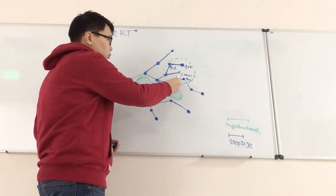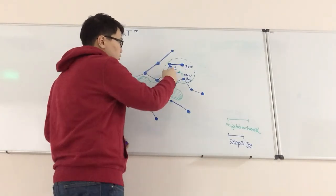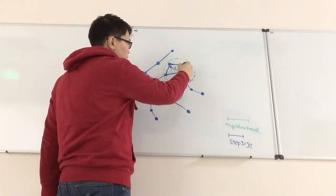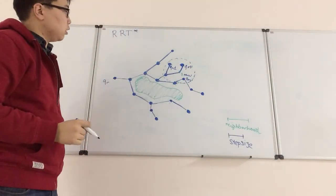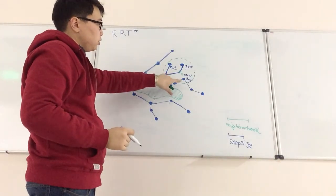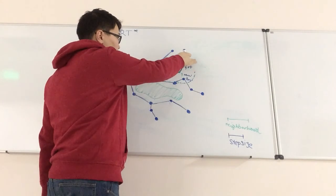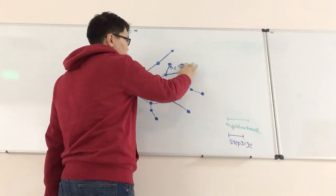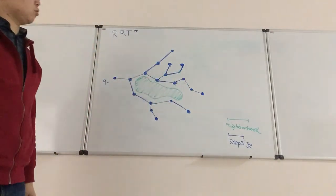So, as you can see, if we go from Q_new to QN0, it will be cheaper than if we go from QN1 to QN3. That's why we will not remove this connection. By doing this, we optimize the chunk of the tree, and you can see that it looks more optimized than it was before.